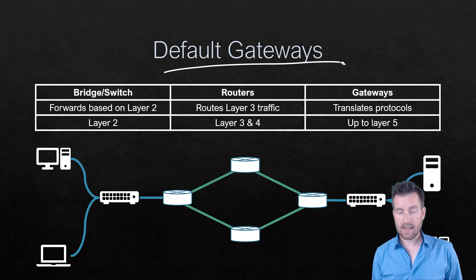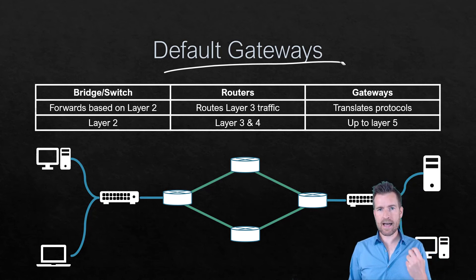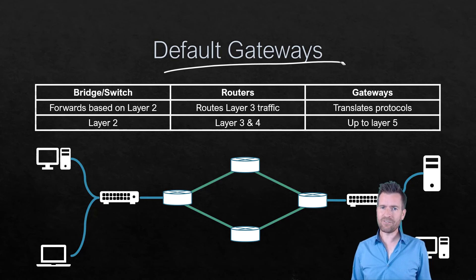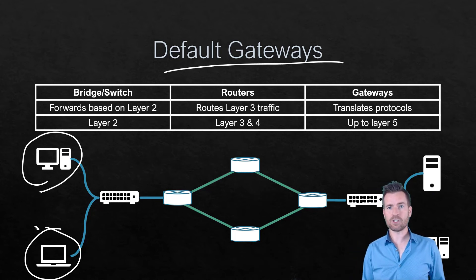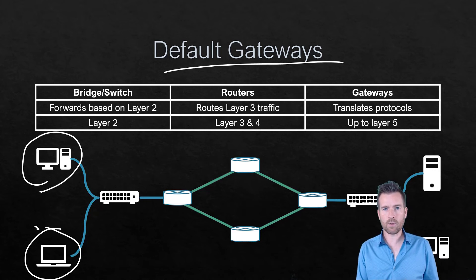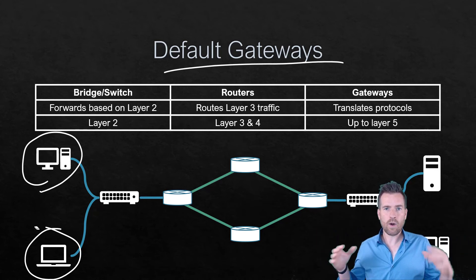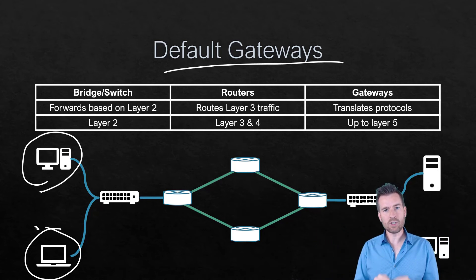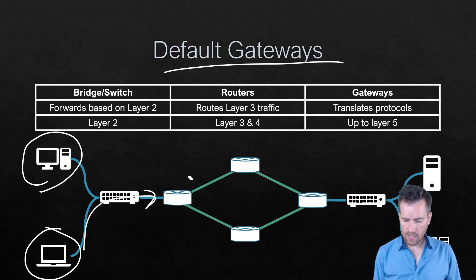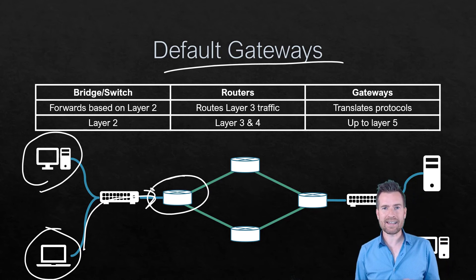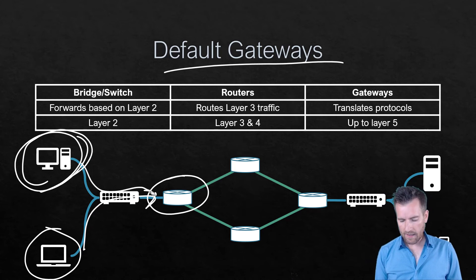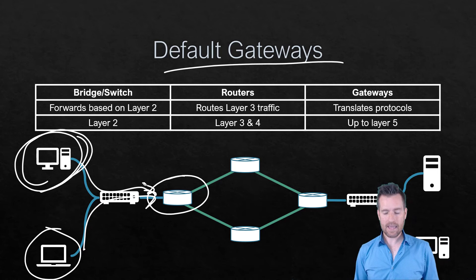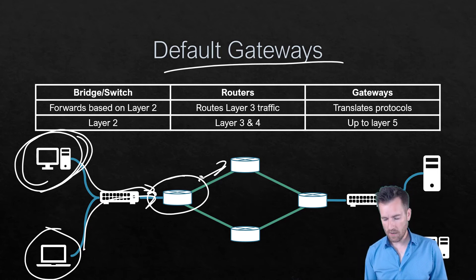Now let's talk about default gateways. A default gateway is not a piece of hardware that sits on your network, and it's not a service a server hosts. A default gateway is a setting configured on your end devices. The end device determines: is this on my local network and I can send it directly, or is it somewhere outside that I don't know where to send? If it doesn't know, it forwards the information to the default gateway, which then handles it and sends it in the proper direction.